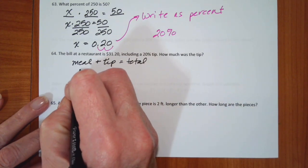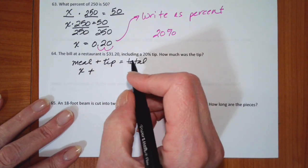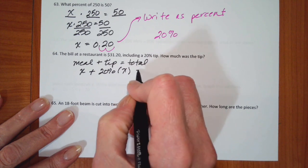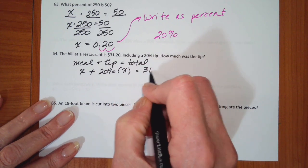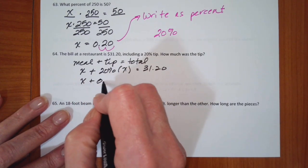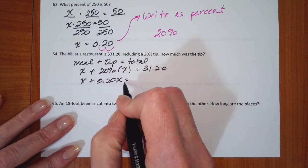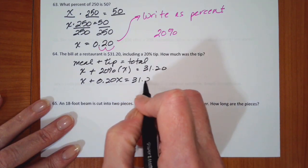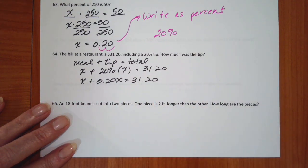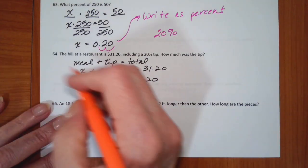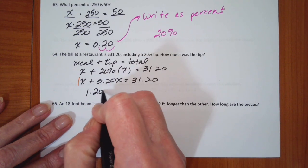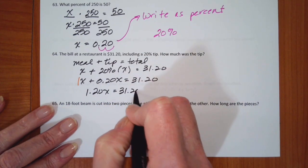So the meal is what we don't know. The tip is 20% of the meal, and we know that total is $31.20. So this is x plus 0.20x is $31.20. Well, these are like terms. This is an implied one.